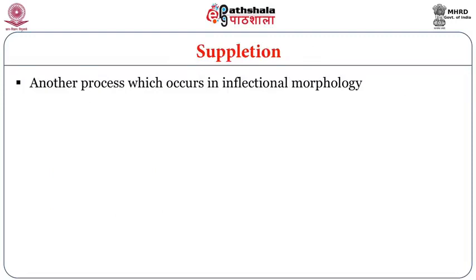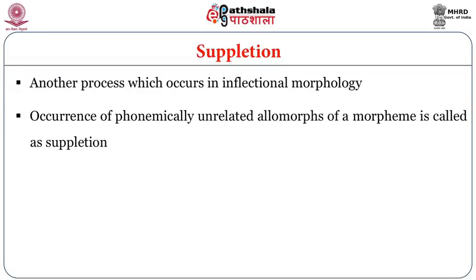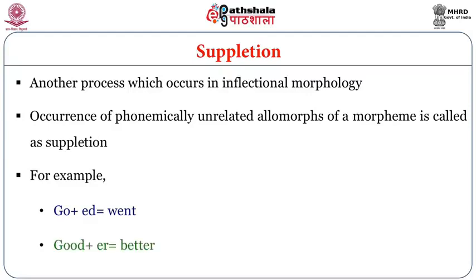Another process which occurs in inflectional morphology is suppletion. The occurrence of phonemically unrelated allomorphs of a morpheme is called suppletion. For example, 'go' plus past tense is not 'go-ed' but becomes 'went'. Similarly, 'good' in its comparative degree does not take 'er' as usual but becomes 'better'.